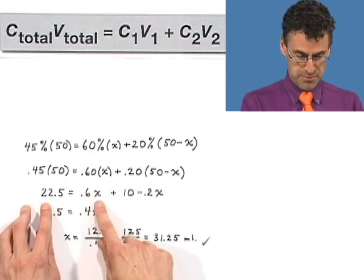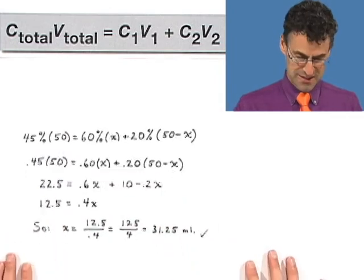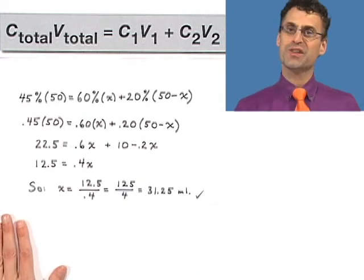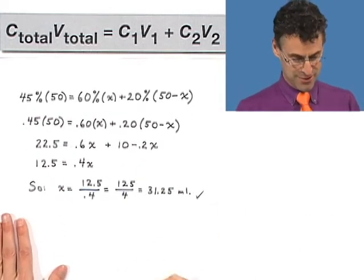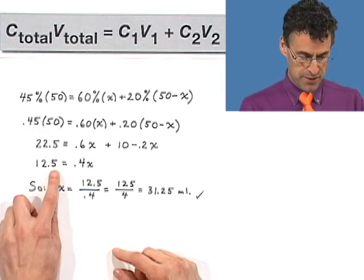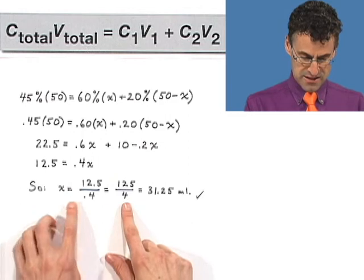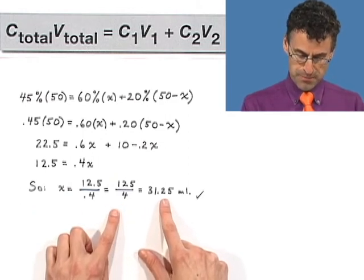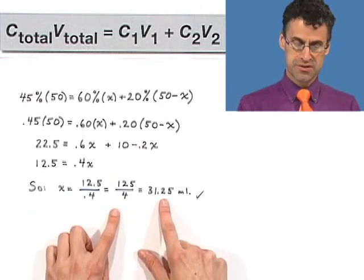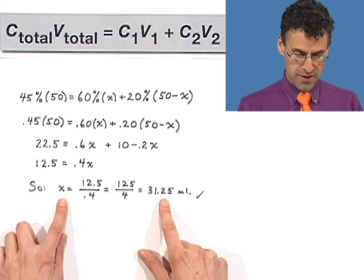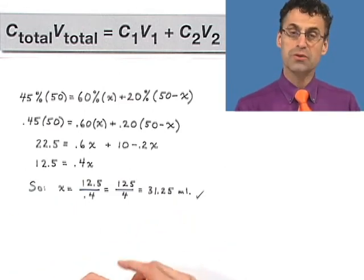You do a lot of distributing and multiplying. You get this. Look at this. This is great. Don't you wish everything were done in advance for you? I really do. And then you end up with 12.5 equals 0.4x. And if you divide and simplify, you see 31 and a quarter milliliters is how much of the first solution that you need.